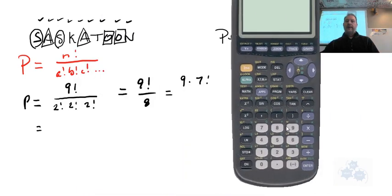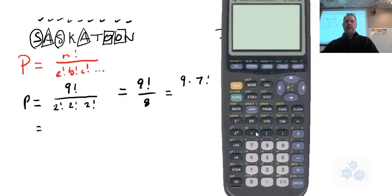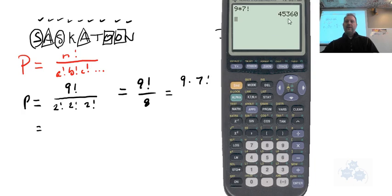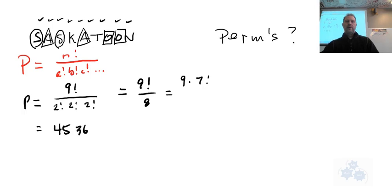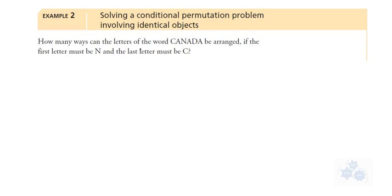On the calculator it's a little tricky to find factorial, but nine times seven factorial gives us 45,360. That's how many different permutations you can have rearranging all the letters in SASKATOON. Because we have repeated letters, switching the two S's around doesn't create a new permutation — that's why we divide.